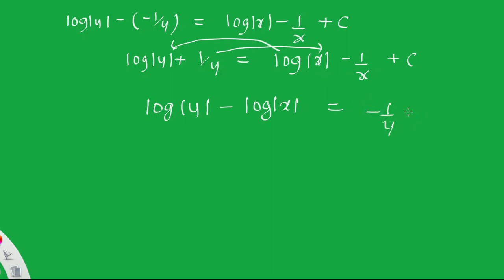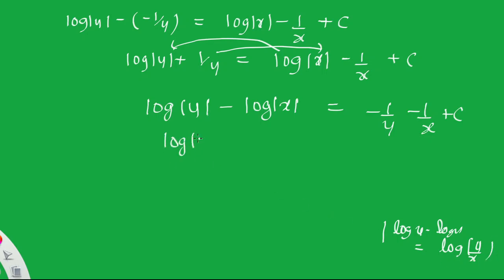Using the formula log y − log x = log(y/x), we get log(y/x) = −1/y − 1/x + C, or equivalently log(y/x) + 1/y + 1/x = C. This is the general solution for the second differential equation.